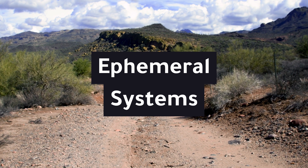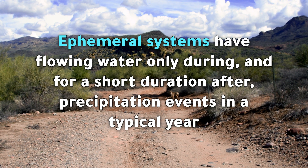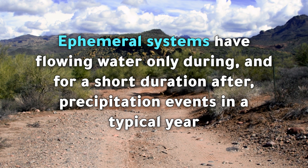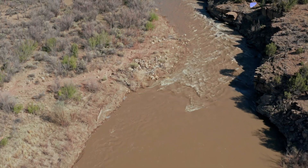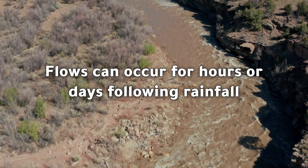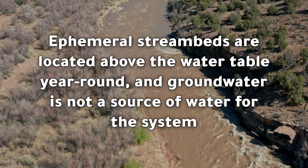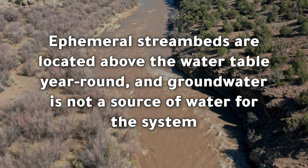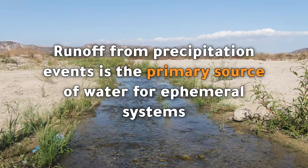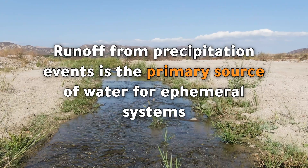Ephemeral systems. Ephemeral systems have flowing water only during, and for a short duration after, precipitation events in a typical year. Flows can occur for hours or days following rainfall. Ephemeral streambeds are located above the water table year-round, and groundwater is not a source of water for the system. Runoff from precipitation events is the primary source of water for ephemeral systems.